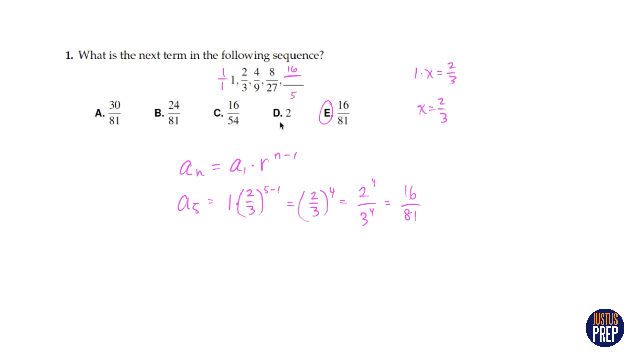Now we can go look at the answer choices and we can cross out these here. So it's really either going to be 54 or 81 on the bottom. And here we can see that we're multiplying by three. Three, nine, 27, and then 27 times three, which is 81. So we could get it this way.